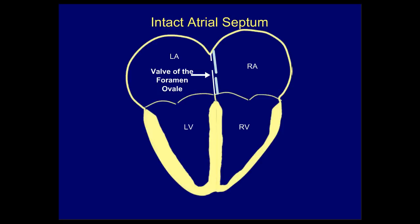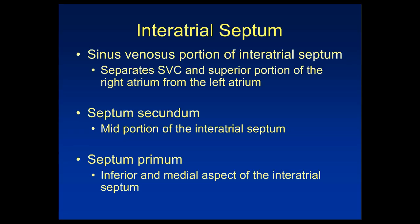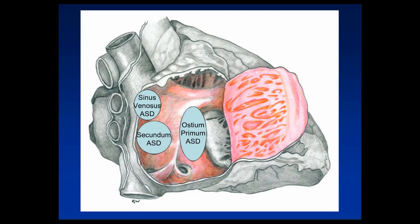There are different parts of the interatrial septum, which is important when discussing septal defects. The sinus venosus portion separates the SVC and superior right atrium from the left atrium. The septum secundum forms the mid-portion, and the septum primum the inferior and middle aspect. The ostium primum defect is typically associated with AV canal defects, so in adult practice we predominantly see secundum ASDs or sinus venosus ASDs.